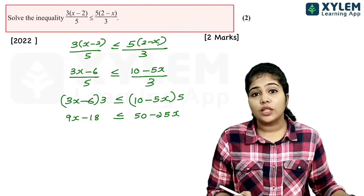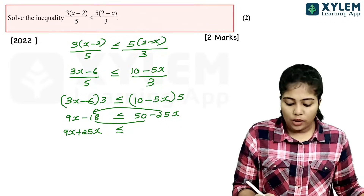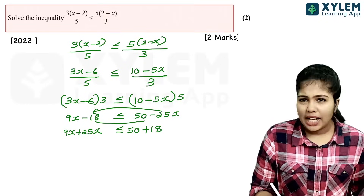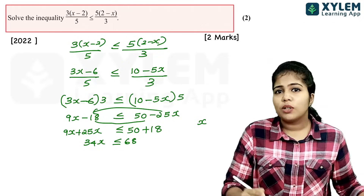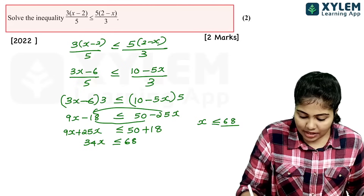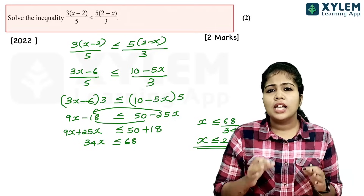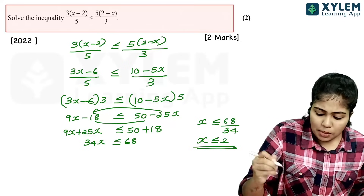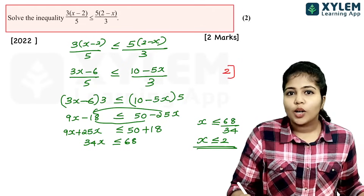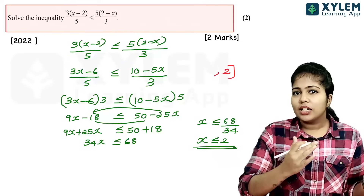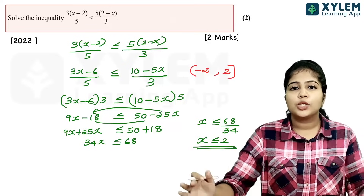We move the 25x to the left: 9x plus 25x, and move minus 18 to the right: 50 plus 18. So 34x is less than or equal to 68. Dividing by 34, x is less than or equal to 2. On the number line, since x is less than or equal to 2, we use a closed (filled) circle at 2 and shade left. In interval notation, this is negative infinity to 2, closed bracket: (−∞, 2].